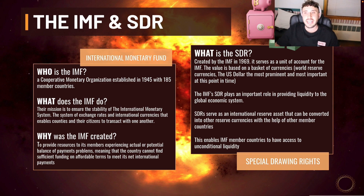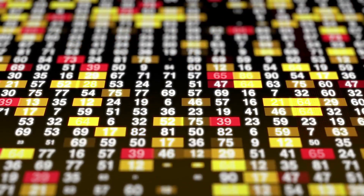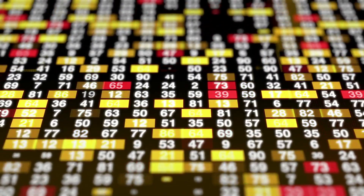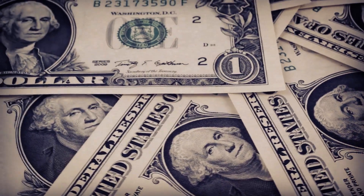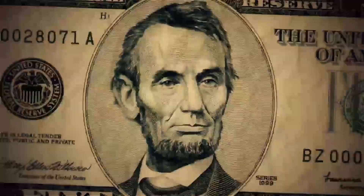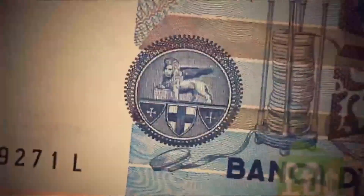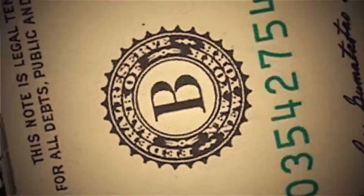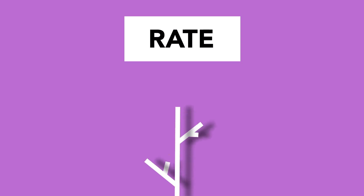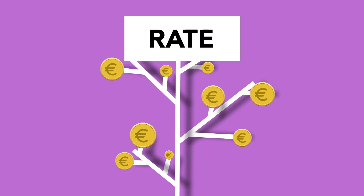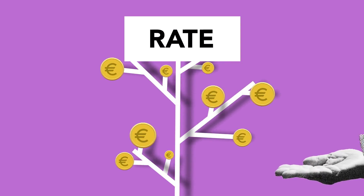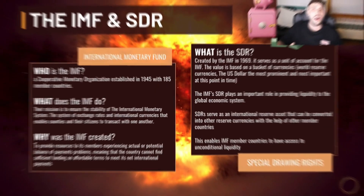The value of the SDR is updated daily and defined by a basket of major currencies used in the world's most important trading and financial systems: the US dollar, the euro, the Chinese renminbi, the Japanese yen, and the UK pound sterling. Those world currencies are all part of the Special Drawing Rights. The SDR's interest rate is adjusted weekly based on the short-term interest rates of government securities of the currencies in the SDR basket.